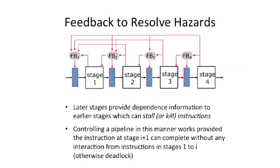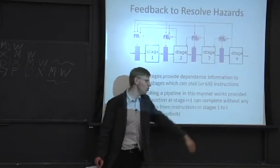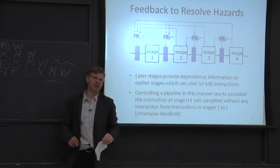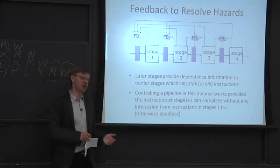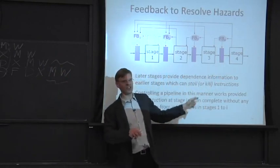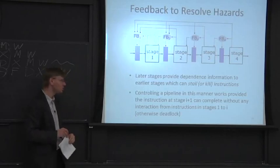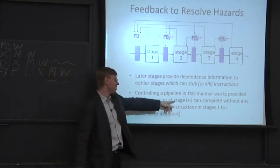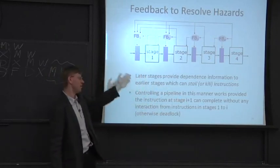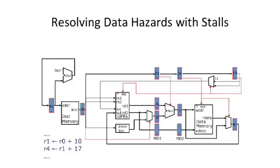Controlling a pipeline this way is really important because if feedback goes in the wrong direction, you might end up with deadlock — where an early instruction is dependent on a later instruction, which is itself dependent on the earlier instruction, creating a cycle where everyone's dependent on everyone and the machine stops. It's critical that stage I+1 only feeds information strictly back to stages 1 through I.